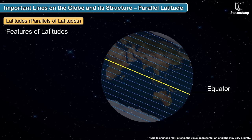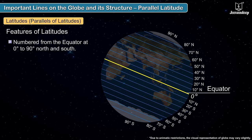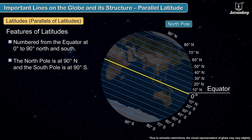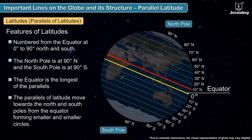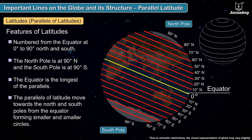These are called latitudes or parallels of latitudes. Latitudes are numbered from the equator at 0 degrees to 90 degrees north and south. The north pole is at 90 degrees north and the south pole is at 90 degrees south. The equator is the longest of the parallels, and they form smaller and smaller circles moving towards the poles.